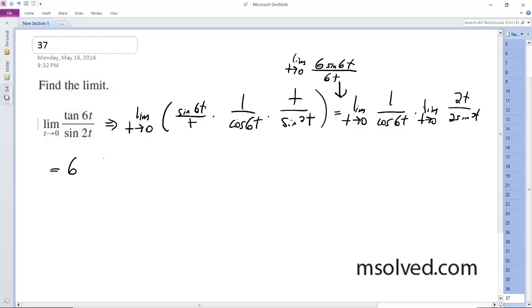Okay, so I can pull all this stuff out. So 6 times the limit of t as it approaches 0 of sine of 6t over 6t times the limit as t approaches 0 of 1 over cosine of 6t times 1 half of the limit as t approaches 0 of 2t over the sine of 2t.